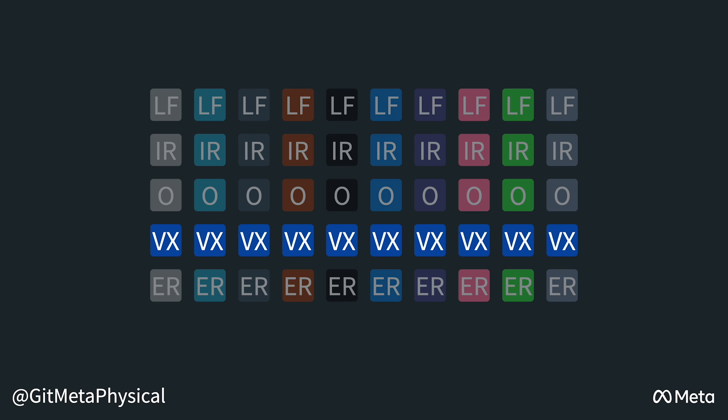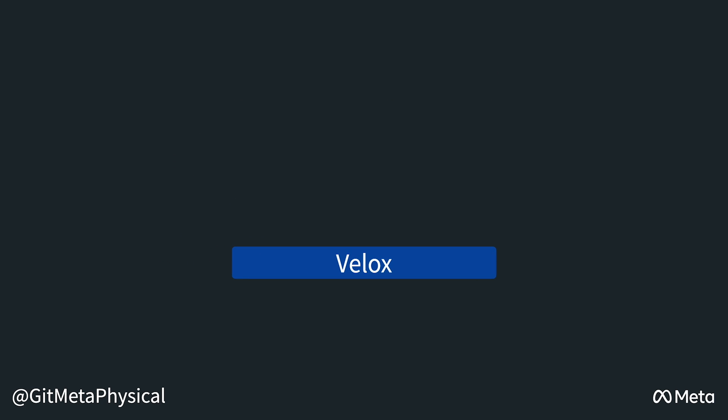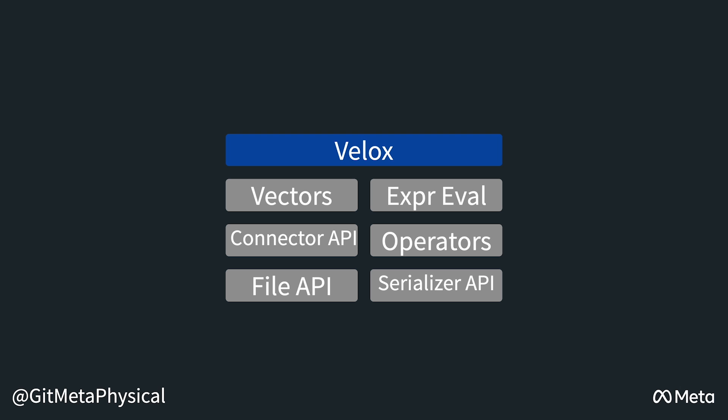Let's take a peek into the design of VLOX and how it works. VLOX has six core components: vectors, expression evaluation, operators, a connector API, a file API, and a serializer API.